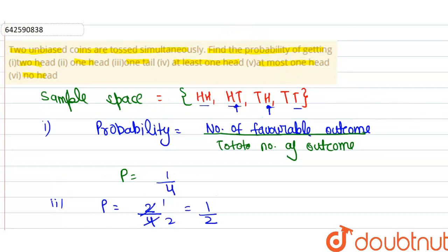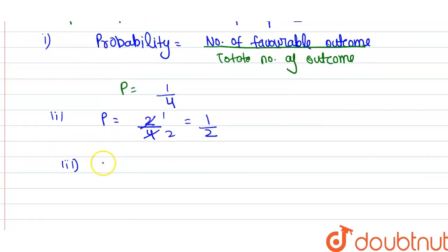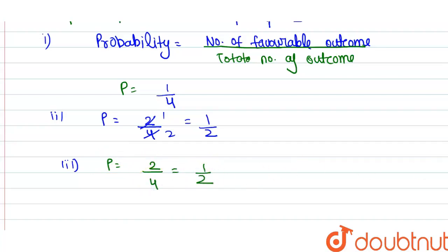For case three, the probability of one tail — again we have one tail in head-tail and one tail in tail-head. So the favorable outcomes are two and the total number of outcomes is four, giving probability equal to one by two.